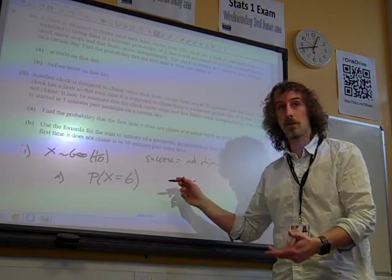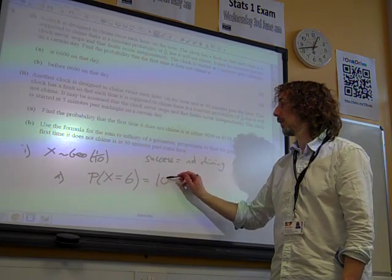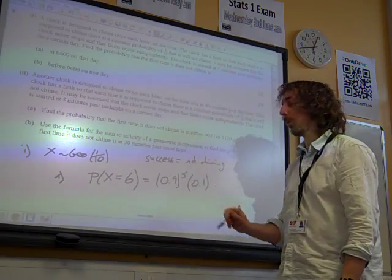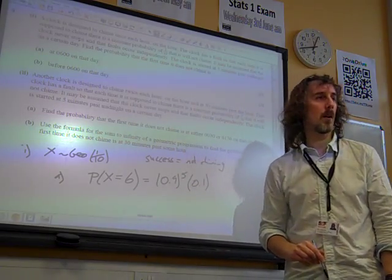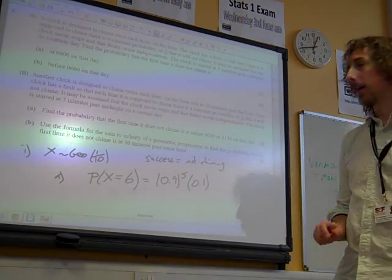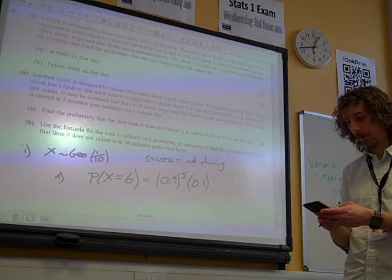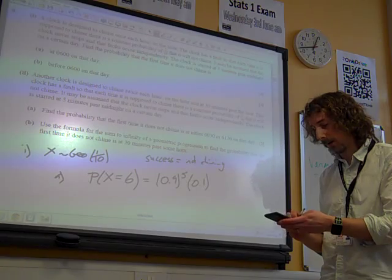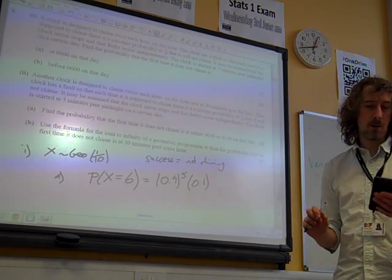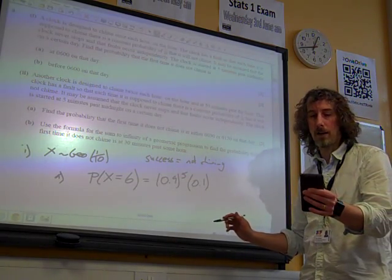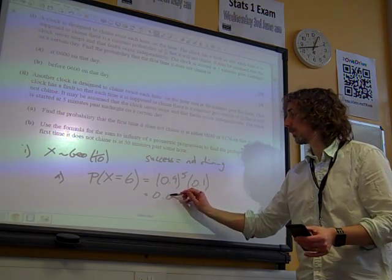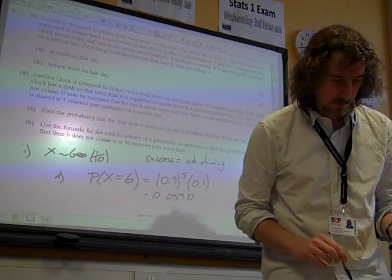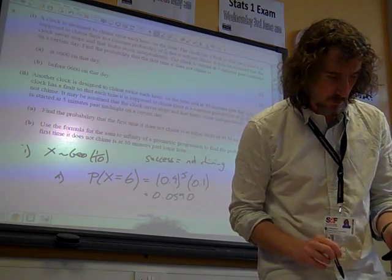That means 5 failures, 0.9 to the 5, followed by 1 success. It really does feel confusing, doesn't it, to be thinking about the failure and success in these contexts, but that's what it is, which gives us 0.0590 to three significant figures. Brilliant.